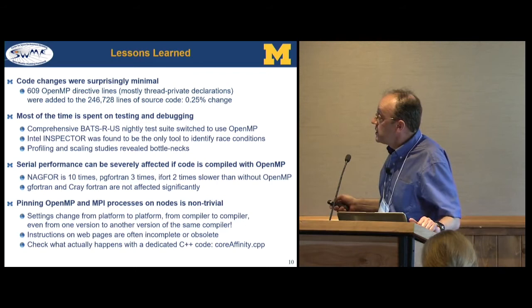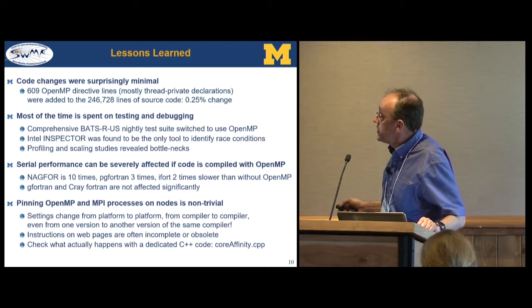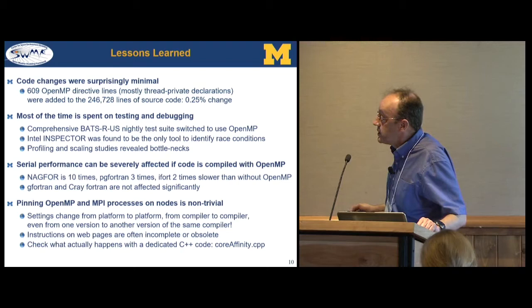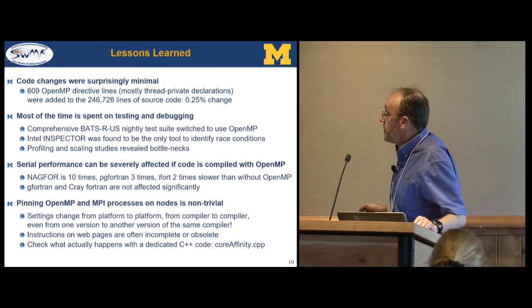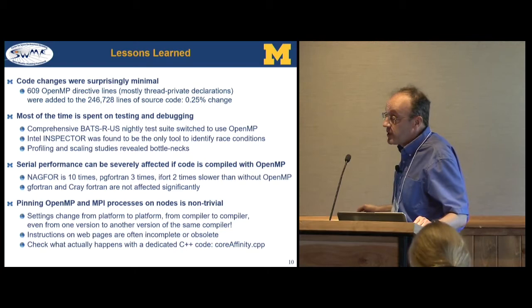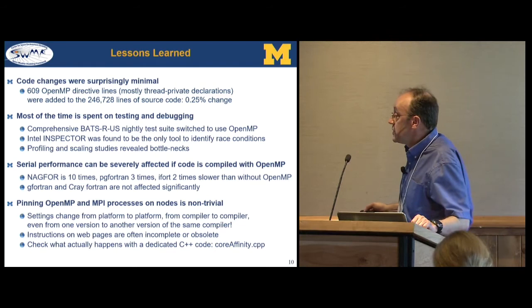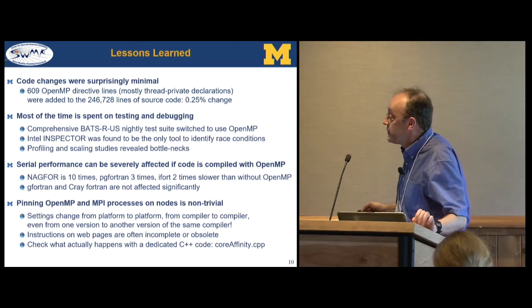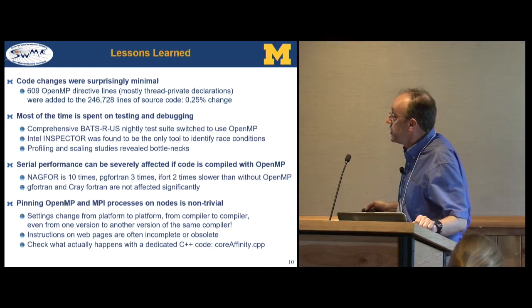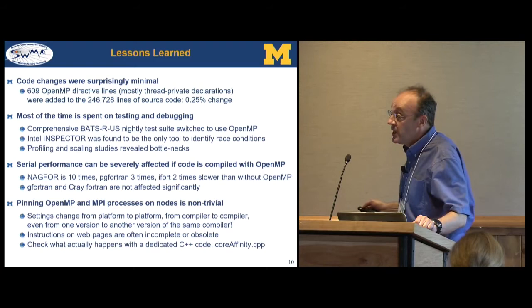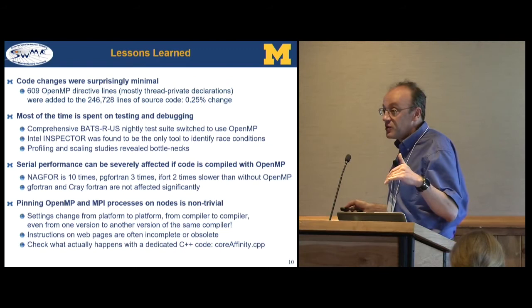In the end, we only had to add about 600 OpenMP directives, mostly thread-private declarations — really much less than I was anticipating. We spent most of the time finding race conditions and other issues. Profiling was very important to find which parts of the code are still bottlenecks. We also discovered that some compilers get slow just because you compile with OpenMP. The Portland Group Fortran is three times slower than without OpenMP; ifort is two times slower. That means before you've even started multithreading, you've already lost a factor of three or two.